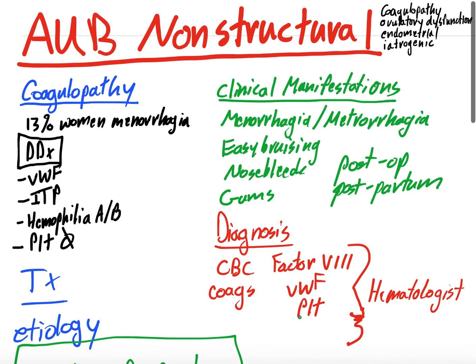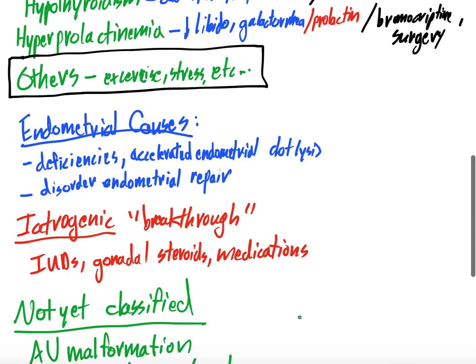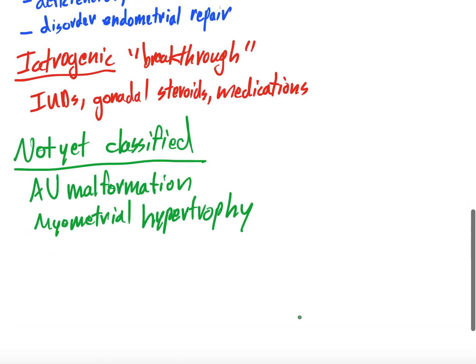To finish the series, the COEIN portion — C-O-E-I-N — covers coagulopathy, ovulatory dysfunction, endometrial causes, iatrogenic causes, and not yet classified causes. The COEIN portion is a lot less satisfying than the PALM portion of the differential for abnormal uterine bleeding. Check out other videos, ask any questions or comments, and we look forward to seeing you back for future videos. Thank you very much, have a good day.